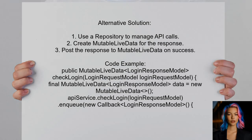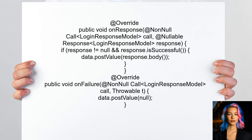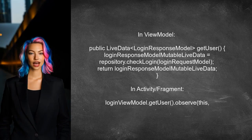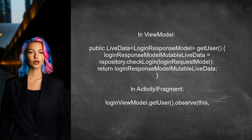An alternative approach involves using a repository pattern to handle API calls. In the repository, you create a mutable live data object that will hold the response from the API. When the API call is successful, you post the response to this mutable live data, which will then update the UI through the view model. In the view model, you can call this repository method to get the live data. Then, in your activity or fragment, observe this live data to update the UI based on the response.